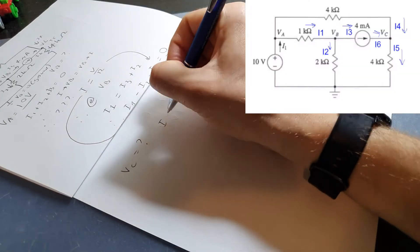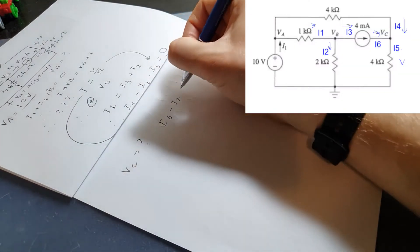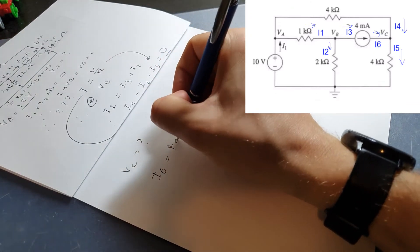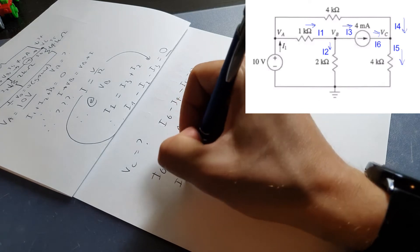Now we use the same process to solve for VC, so create another equation with the remaining I values: I6 minus I5 minus I4 equals 0. So now we have a look.